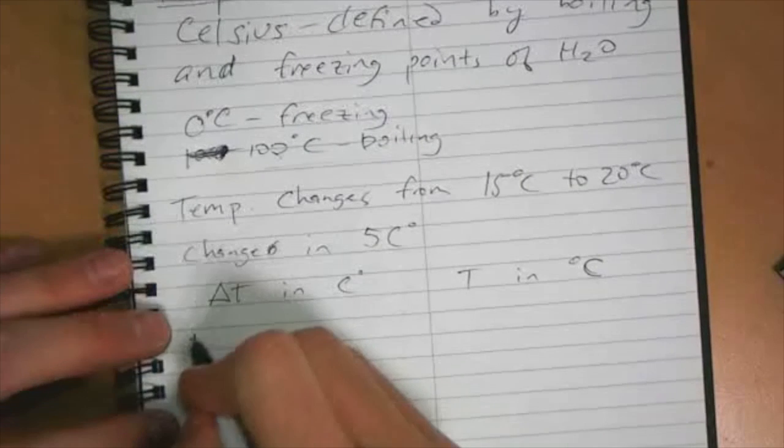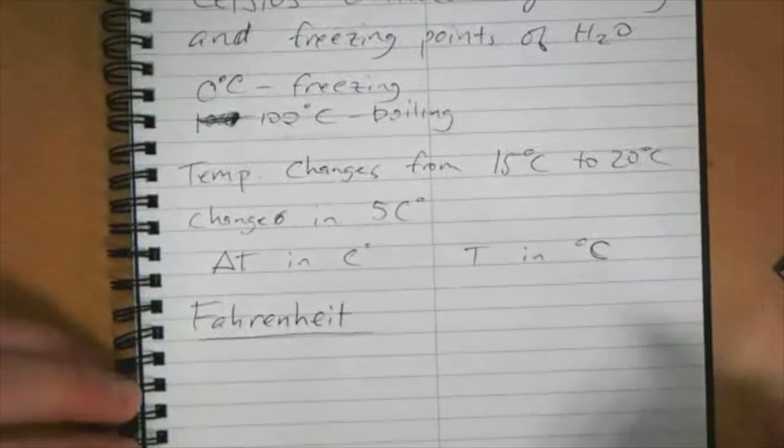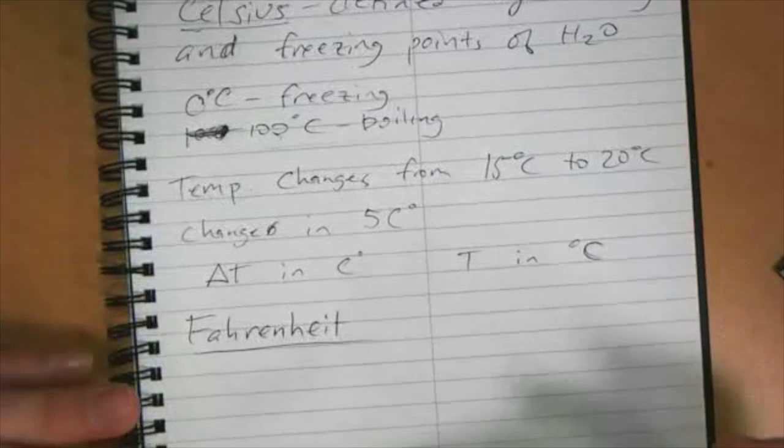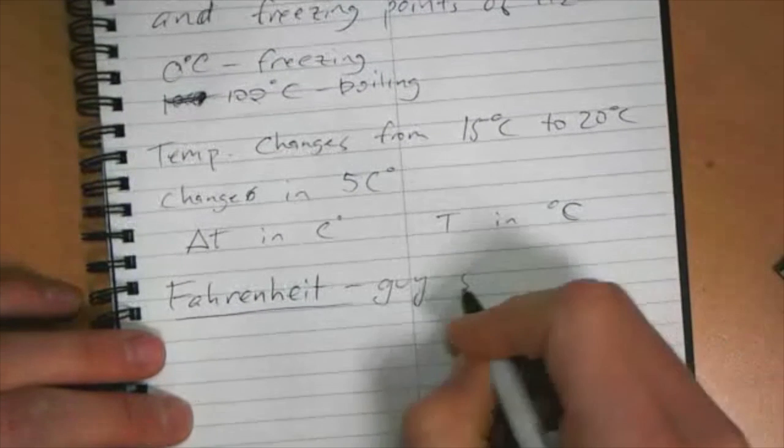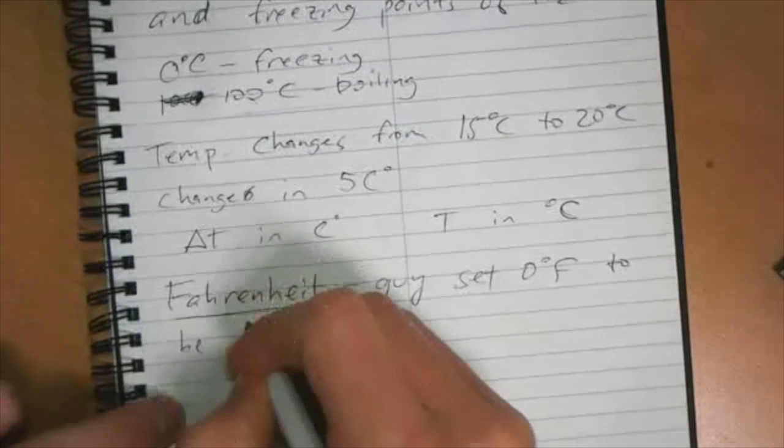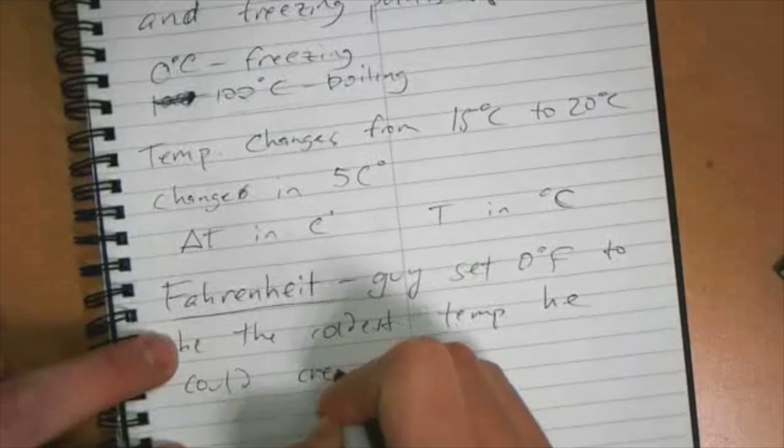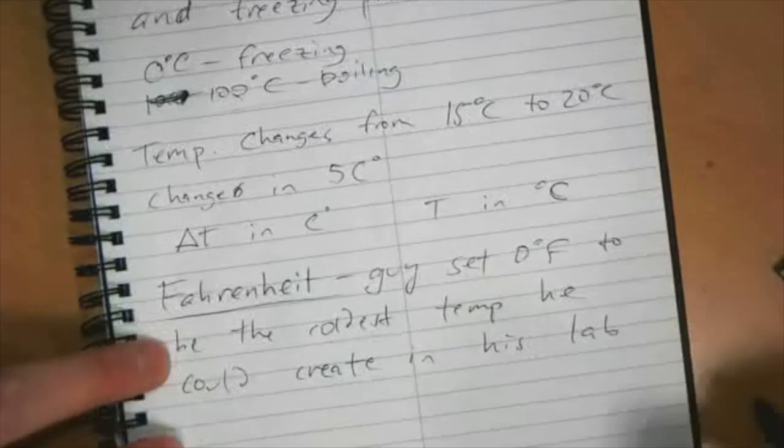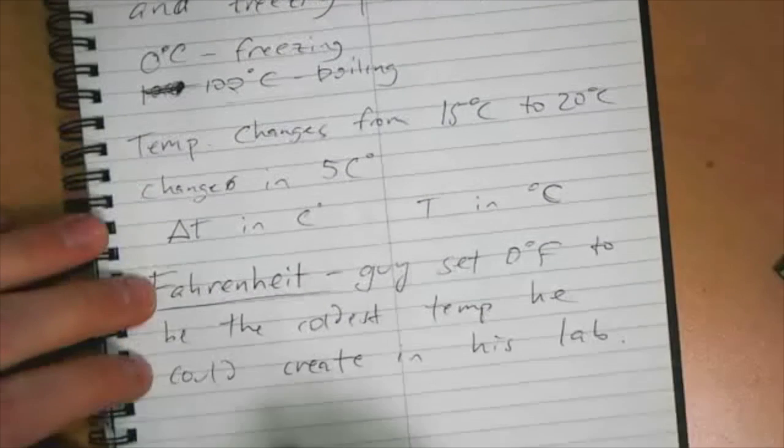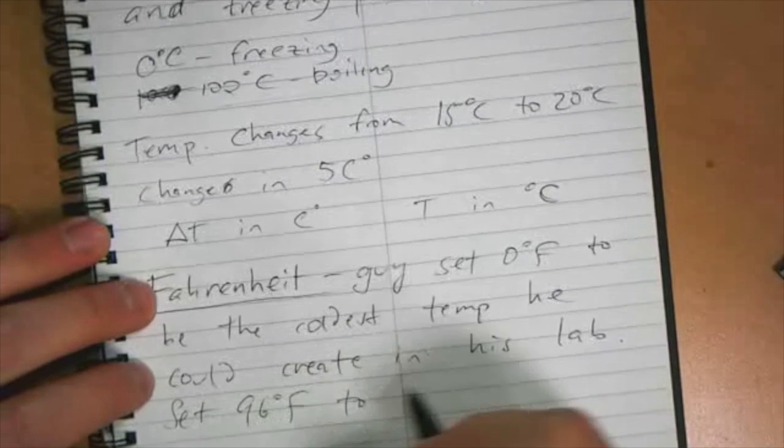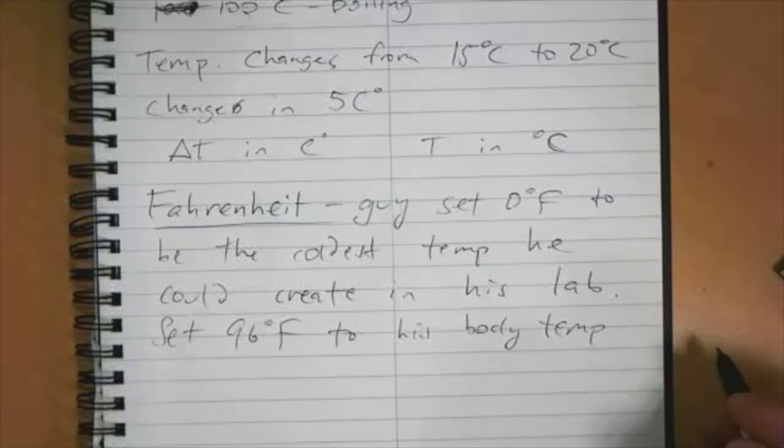Another temperature system that's important only because this is an American school is Fahrenheit. It's pretty much only used in the U.S. as far as I know. Fahrenheit is really a ridiculous scale. There was a guy named Fahrenheit, and he set zero degrees to be the coldest temperature he could create in his lab. Obviously, he was not in Russia or Siberia or Canada. And he set 96 degrees Fahrenheit to be his body temperature.